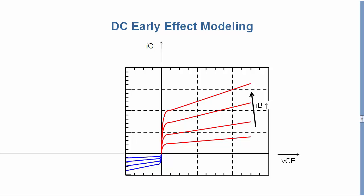As depicted, the early voltage parameters represent the x-intercept of the tangents to the slopes of the output characteristic.